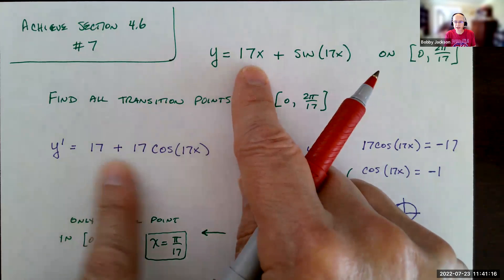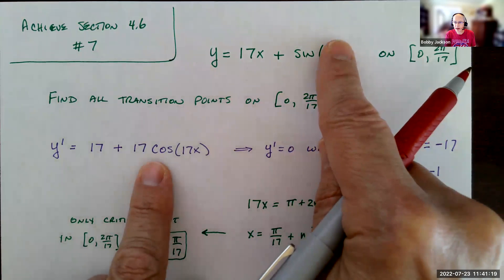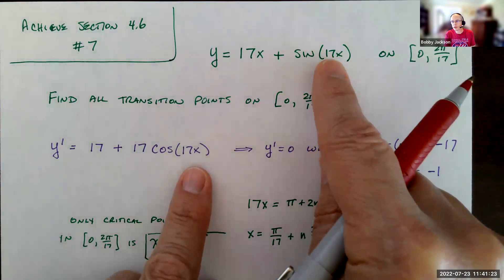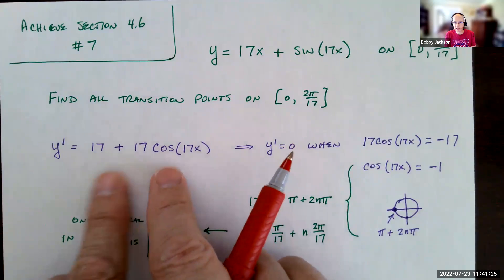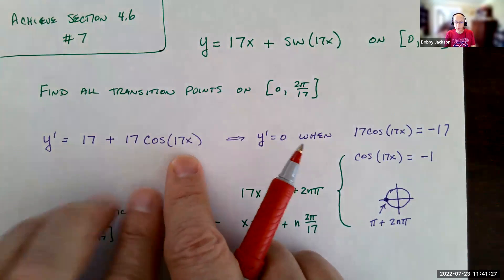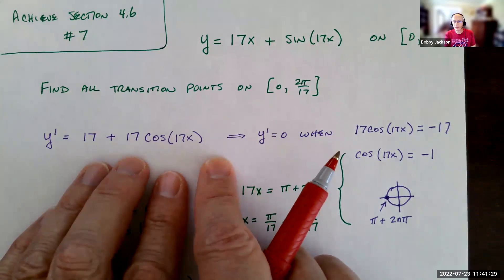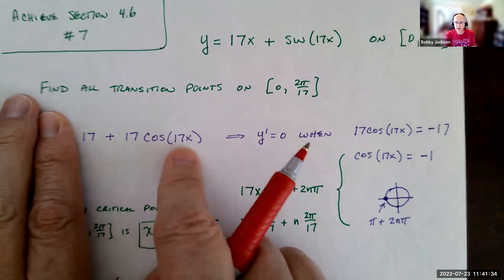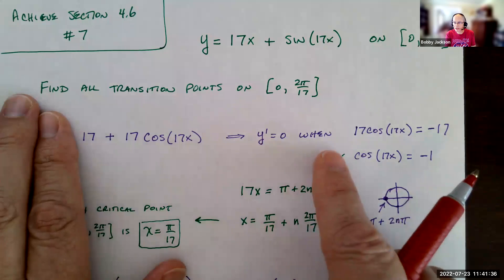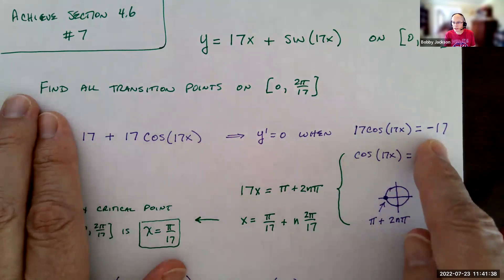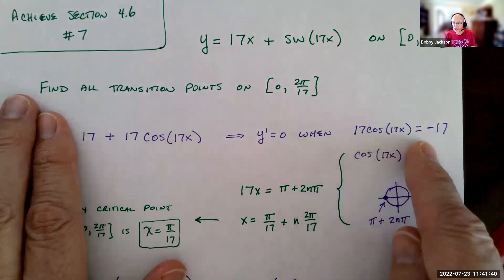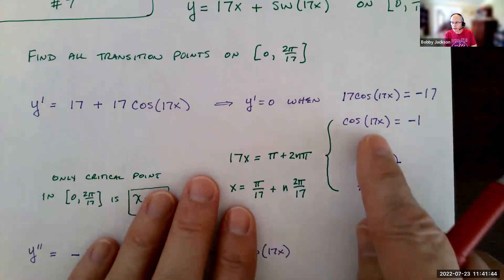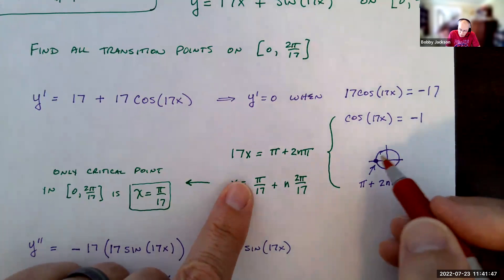Derivative of 17x is 17. And then here I have to use chain rule. Derivative of sine is the cosine of 17x times the derivative of the inner function. Derivative 17x is 17. So there's my derivative: y' = 17 + 17cos(17x). This is never undefined, but it is 0 when 17cos(17x) equals negative 17. When is cosine of 17x equal to negative 1?